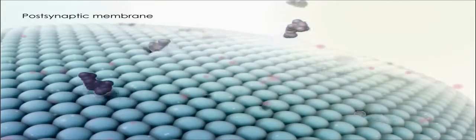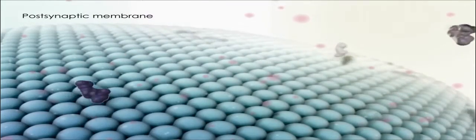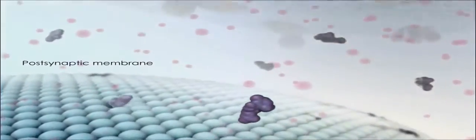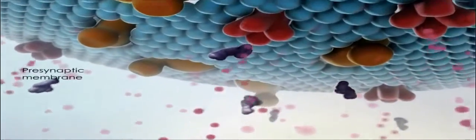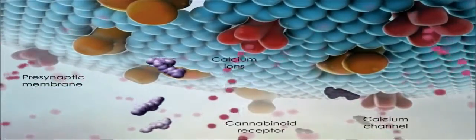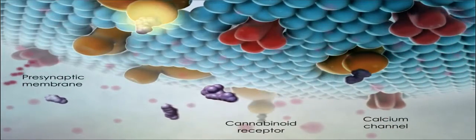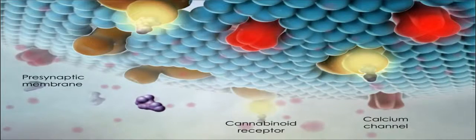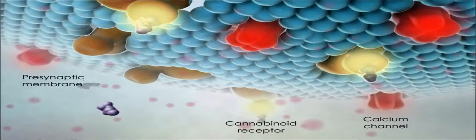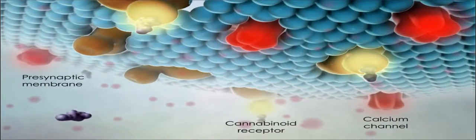Endogenous cannabinoids are synthesized on demand from the phospholipid bilayer of the post-synaptic membrane. These lipophilic ligands are released directly into the synaptic cleft and act in retrograde fashion on the presynaptic neuron where the cannabinoid receptors are expressed.